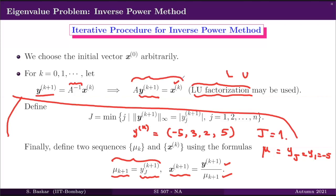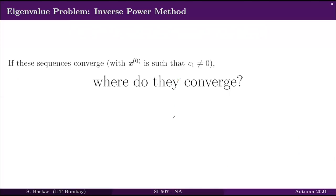If no method is specified, you may choose to find A inverse and go ahead; if a method is specified, you use that to obtain y_k. This is the iterative procedure for the inverse power method. Regarding convergence, the same theorems as for the power method apply here with appropriate changes. The two convergence theorems introduced for the power method both hold for the inverse power method.